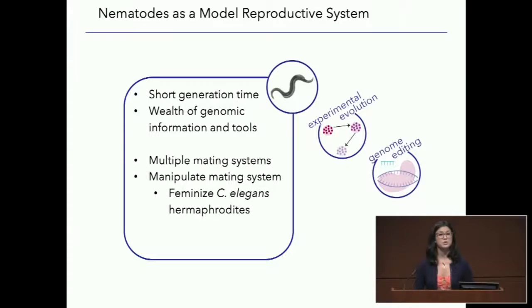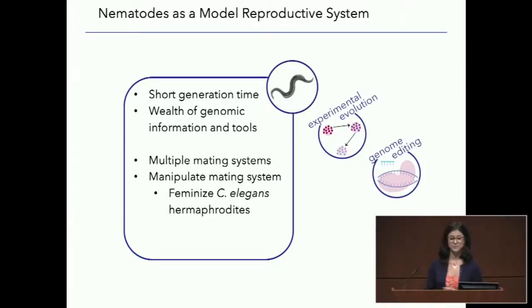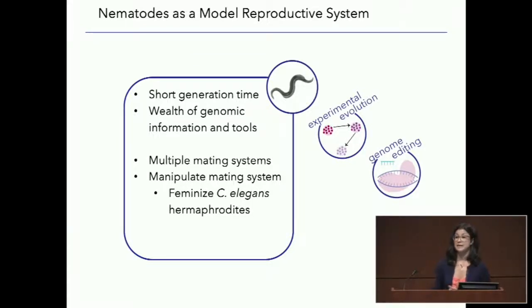Some other things that make worms great: there are multiple mating systems present within the Caenorhabditis genus, created by three independent lineage transitions to self-fertilizing hermaphroditism, giving us natural variation in the strength of sexual selection across Caenorhabditis. We also have the ability to manipulate mating system — for example, in C. elegans we can feminize hermaphrodites to make them functionally female and test a hermaphrodite versus this new female state. And finally, worms have really cool sperm, characterized by a unique crawling sperm morphology that is unique to and conserved across the phylum Nematoda, allowing us to look at sperm competition and gametic selective processes from a different perspective.